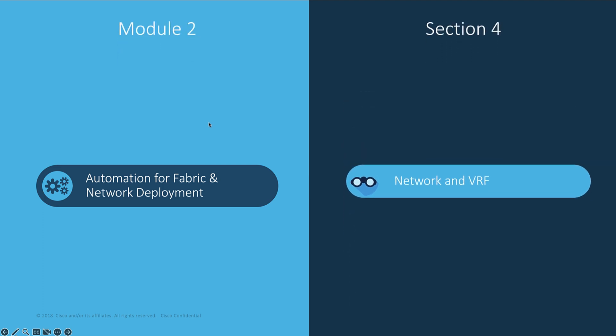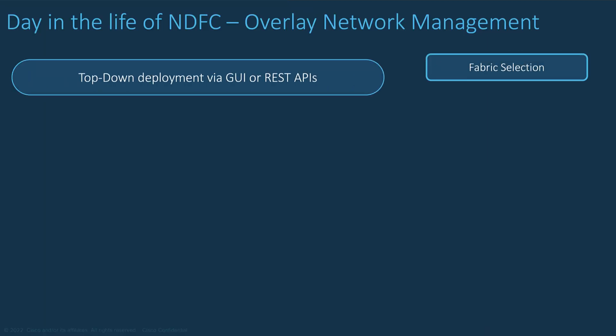With the Underlay Network deployed to interconnect LAN Classic and VXLAN EVPN Multisite, the next step is to create different Overlay Networks and VRFs and attach them to the selected switches and interfaces. The configuration of Overlay Networks and VRF can be pushed either from the NDFC user interface or from the NDFC RESTful APIs.